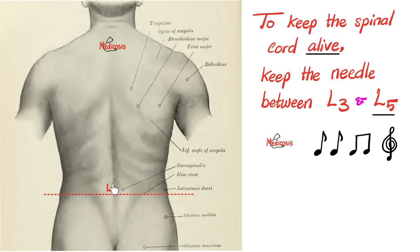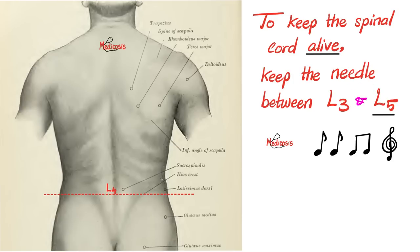The iliac crest is at L4. So where should we stick the lumbar puncture needle? The spinal cord itself ends at L2, so you do not want to go L2 or above — you would injure the spinal cord. To keep the spinal cord alive, keep the needle between L3 and L5. Not above L3 because you'd injure the cord, and not below L5 because there is no cerebrospinal fluid below L5.